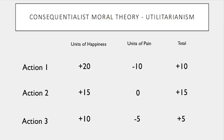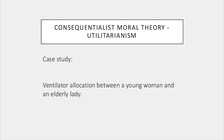According to utilitarianism, the right action is action two, as on balance it produces the greatest amount of overall happiness. A real-life example could be deciding ventilator allocation. Imagine we have one ventilator left at a hospital and two patients who require it — one is an otherwise fit and healthy young woman, and the other an elderly lady. Utilitarianism would advocate giving the ventilator to the young woman as, overall, it would produce the greatest amount of happiness, all things being equal.